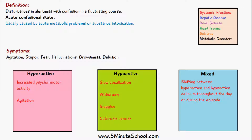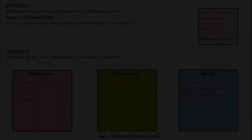With the mixed type of delirium we have a shift between the hyperactive and hypoactive states, and this can happen throughout the day or during the episode. Overall the symptoms of delirium include agitation, stupor which basically means they appear almost unconscious, feeling fearful, having hallucinations, and being drowsy or delusional.